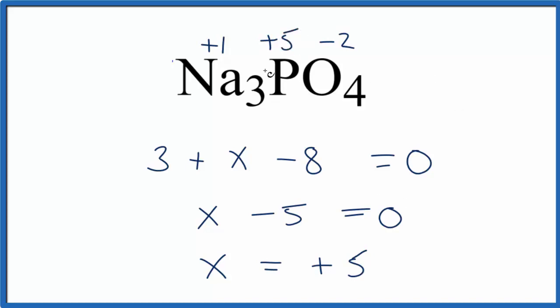You could also do it in your head. You have a plus three here and you have a minus eight here, so you could add those up and that would be minus five and you'd know that for this to be zero phosphorus would have to be a plus five. Either way, the oxidation number for P in Na3PO4 is plus five.